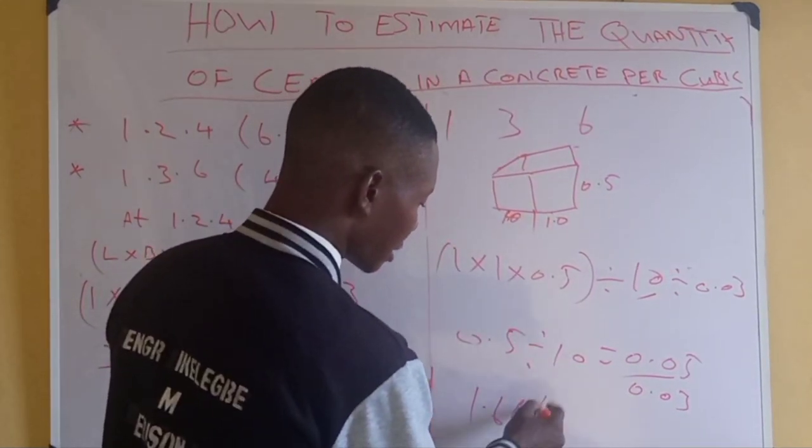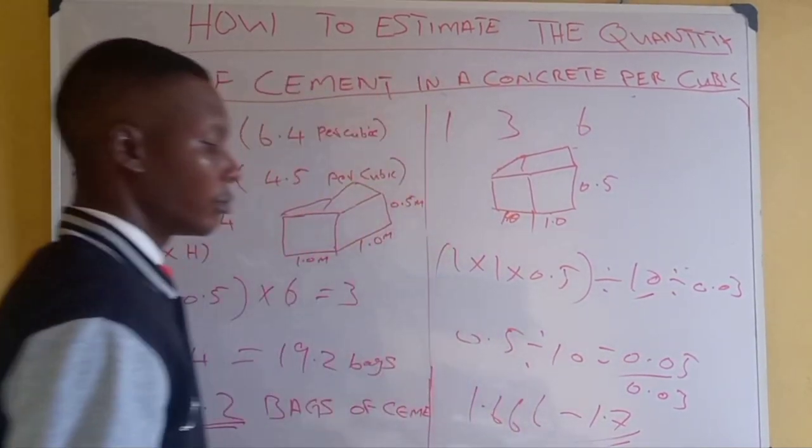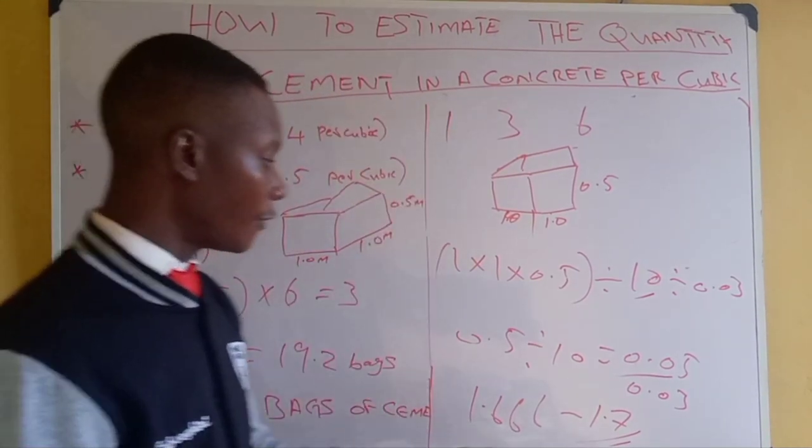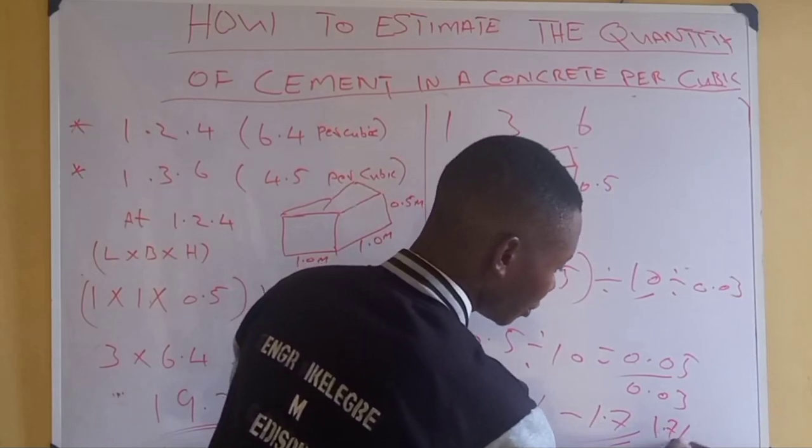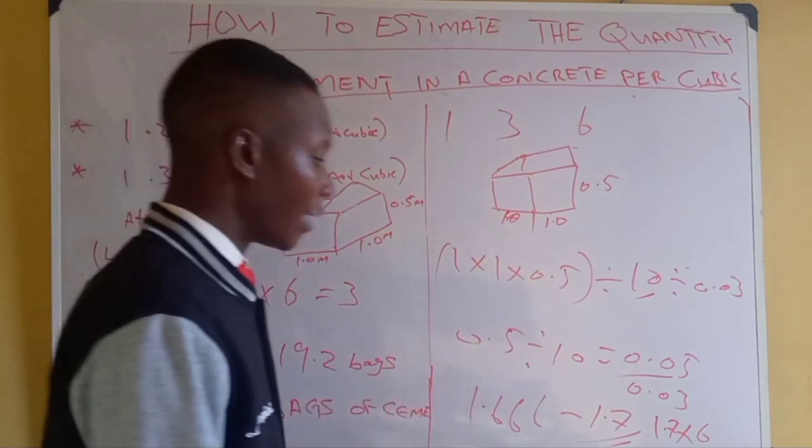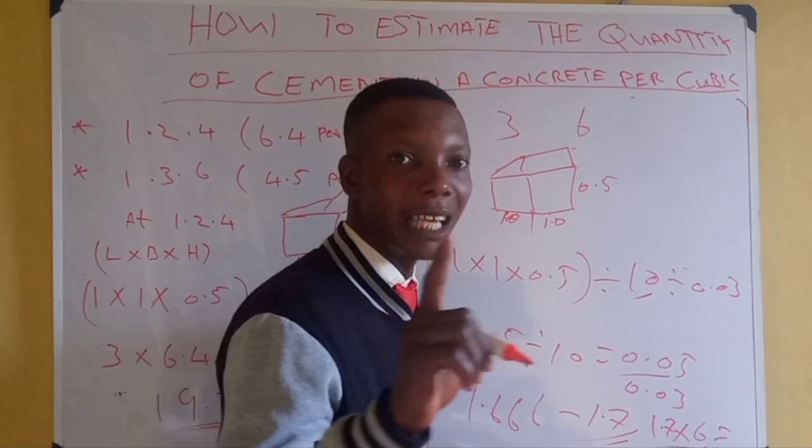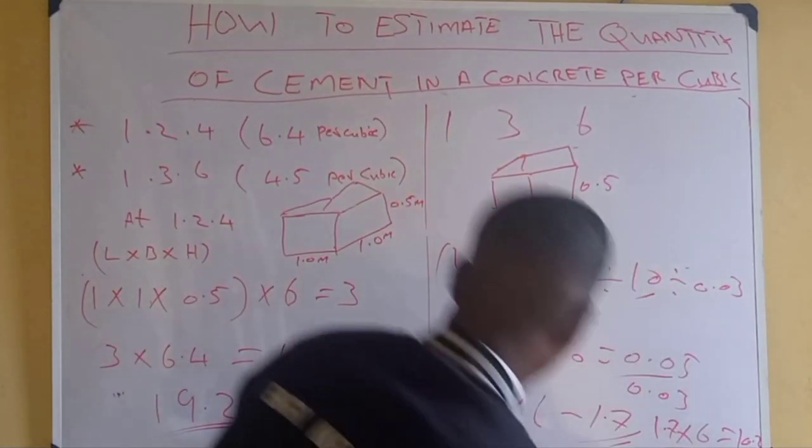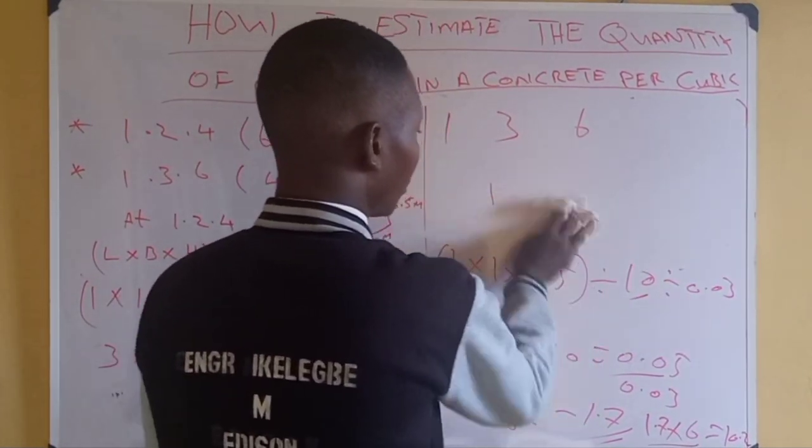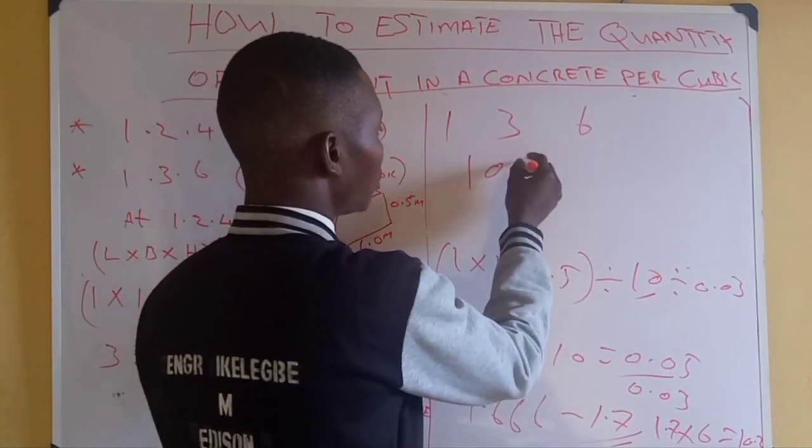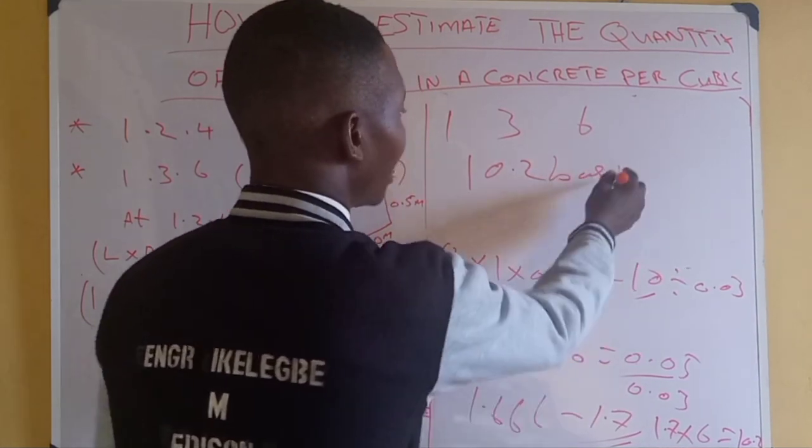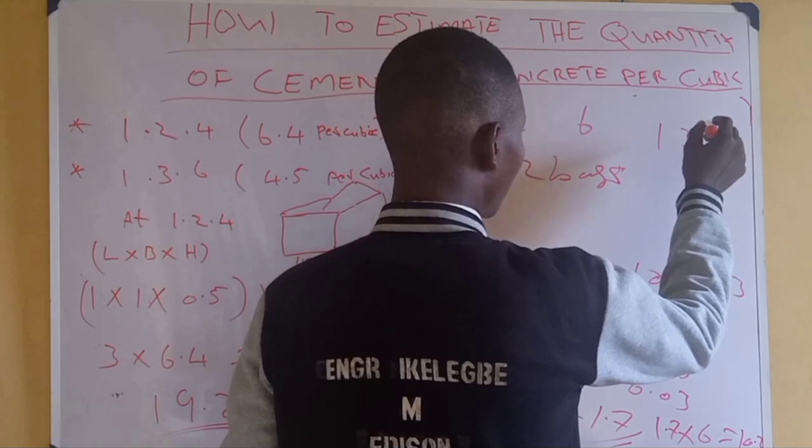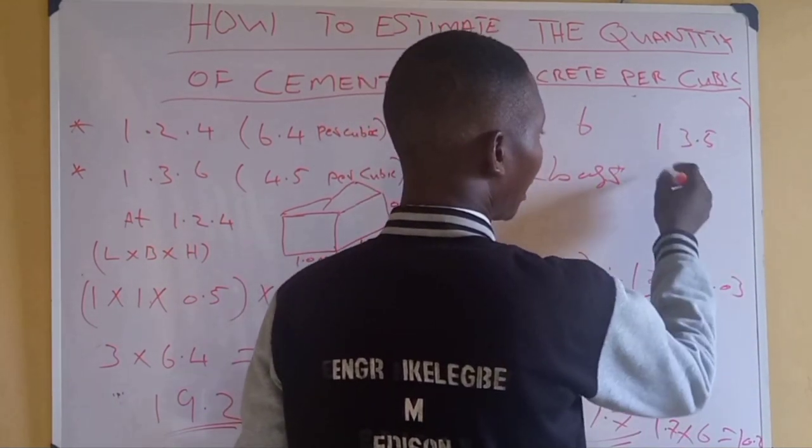Approximately 1.7 bags. This 1.7 is more than 1 bag. If you times this now, 1.7 times 6, you are having approximately 10.2. 10.2 bags of cement to be used.